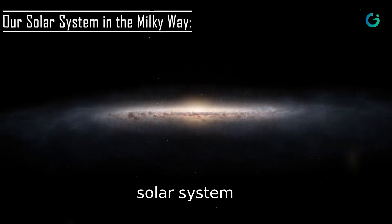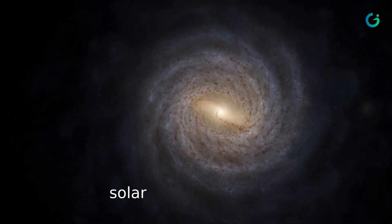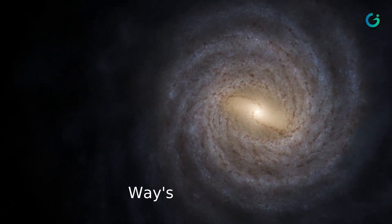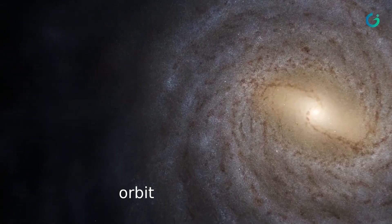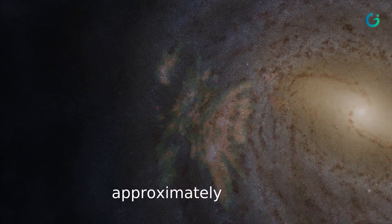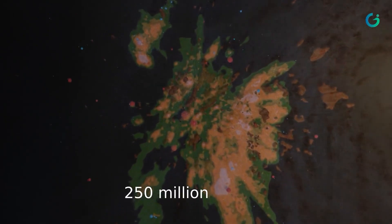The Sun, along with our solar system, resides within one of the Milky Way's spiral arms. We orbit around the galactic center, completing one orbit approximately every 225 to 250 million years.